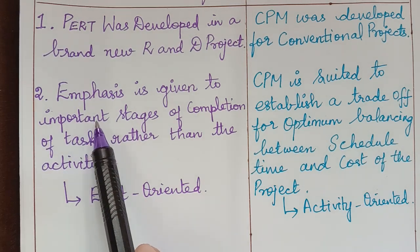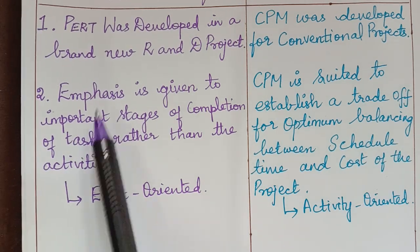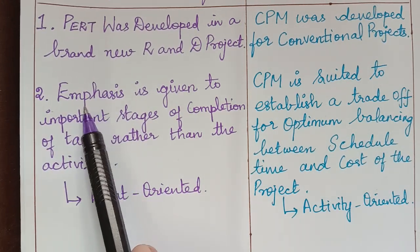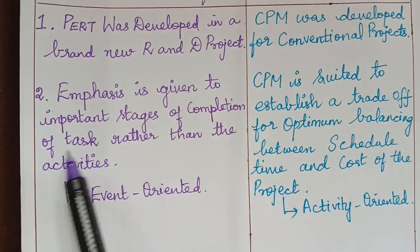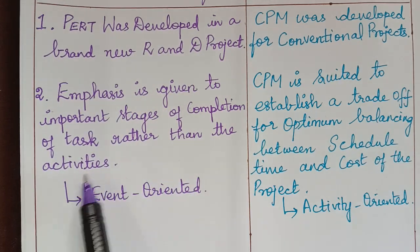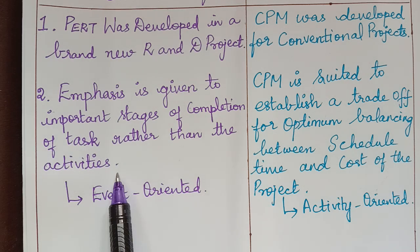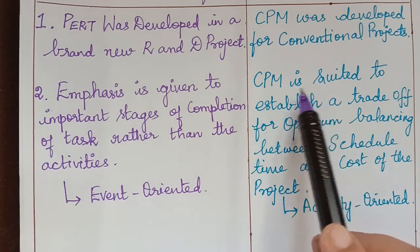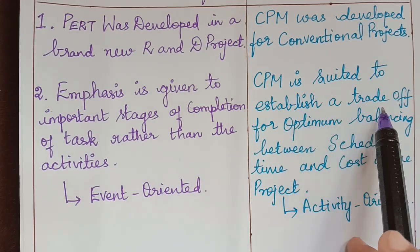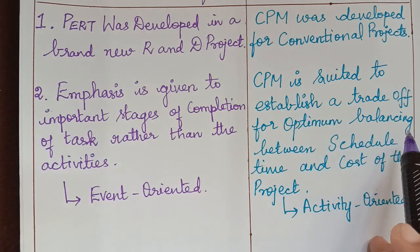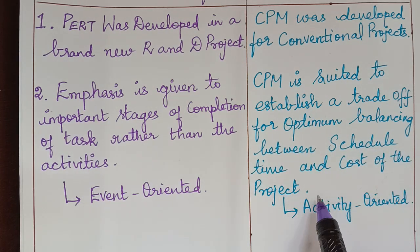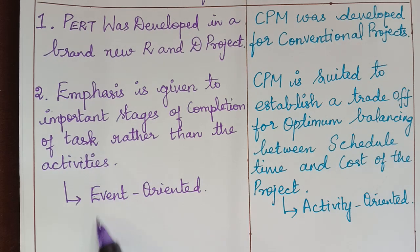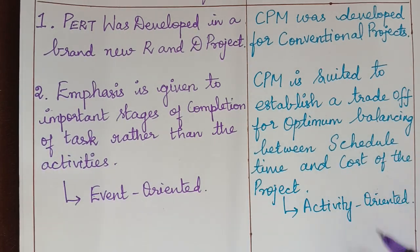The second difference is: in PERT, emphasis is given to the important stages of completion of a task rather than the activities — it is mainly event-oriented. Whereas CPM is suited to establish a trade-off for optimum balancing between schedule time and the cost of the project, making it activity-oriented.